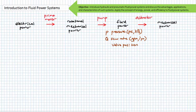Ordinarily, the initial conversion to fluid power takes place in a pump where typically rotational mechanical power — characterized by a twisting force called torque and rotational speed — is converted to fluid power. Pumps, therefore, are mechanical to fluid power converters. Ordinarily, pumps are driven by prime movers like an electric motor or an internal combustion engine, themselves also being power converters. A motor would convert electrical power to rotational mechanical power, and an internal combustion engine would convert the stored chemical energy of old dinosaur bones to mechanical power, heat, and noise.